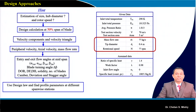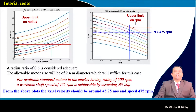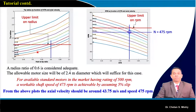We started discussing the selection of different parameters and correlated them with the hub-to-tip radius ratio. We correlated our radius ratio with different axial velocity numbers. At the same time we have a constraint on rotational speed, which was kept at 500 rpm.